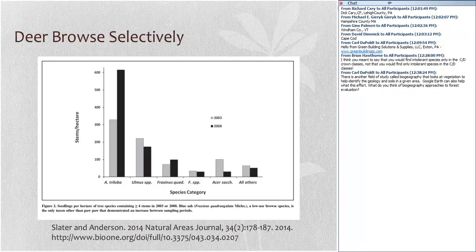The first thing we need to appreciate about deer is that deer browse selectively — they will favor some species and disfavor others. That's not different in principle from most of us: when we go to a buffet, there are some foods we like and some we dislike, and we tend to eat the foods we like and not eat the ones we dislike.